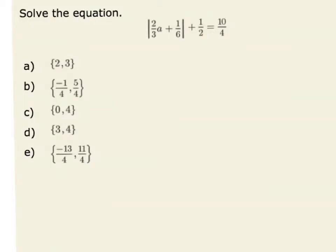In this problem, we are asked to solve the absolute value equation: the absolute value of 2 thirds times a plus 1 sixth, then add a half, is equal to 10 fourths.